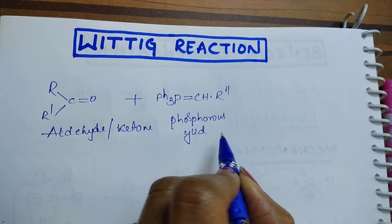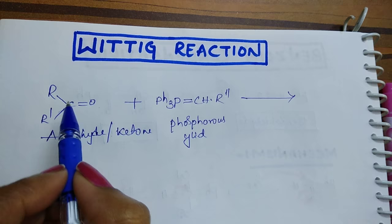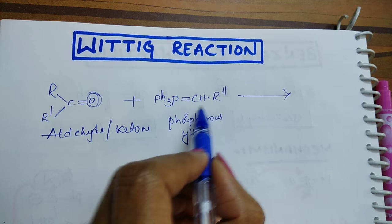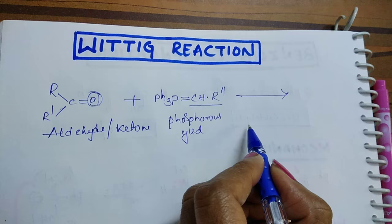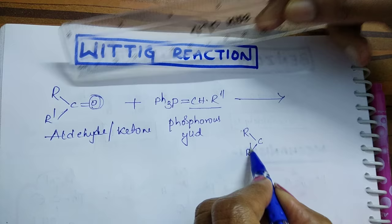Here, what happens is it results in the formation of alkene. Actually, this exchanges - the ketone or aldehyde exchanges oxygen with this part. It results in the formation of R-C-R' double...